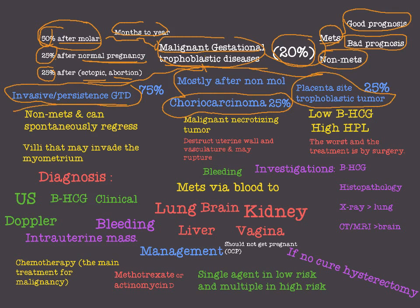Invasive or persistent GTD is the most common type, representing about 75% of all malignant gestational trophoblastic disease. Most invasive persistent GTD happens after a molar pregnancy, as a result of a plateauing or rising beta-hCG after surgery of a complete or partial molar pregnancy, within months to a year.